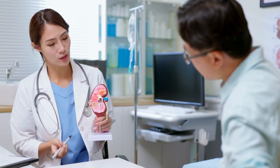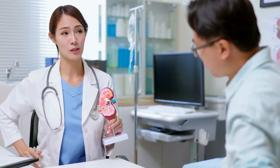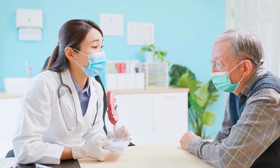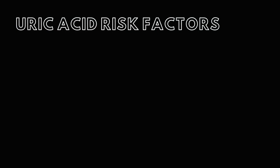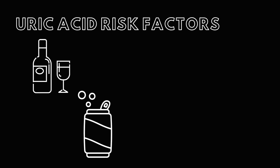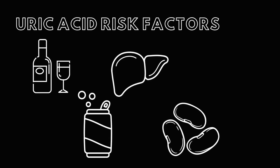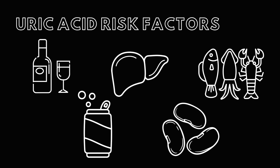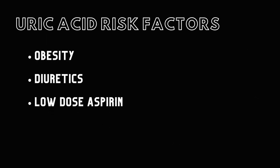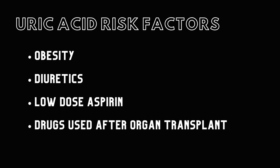It is important to note that not everyone with high uric acid levels gets gout, but certain factors can increase your chances. The consumption of alcohol, drinks with high levels of fructose, liver and game meats, dried legumes, and certain seafoods all increase your risk. Obesity, diuretics, low-dose aspirin, and drugs used after organ transplants can all increase your uric acid levels.